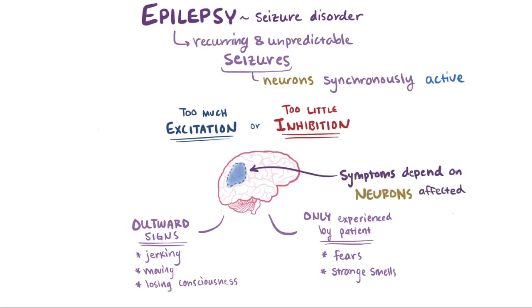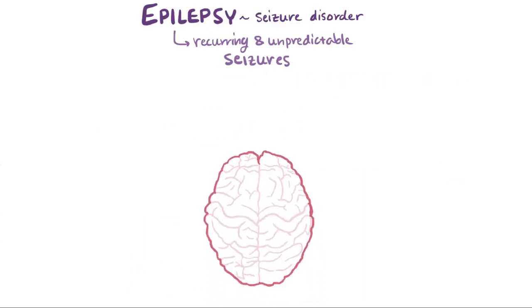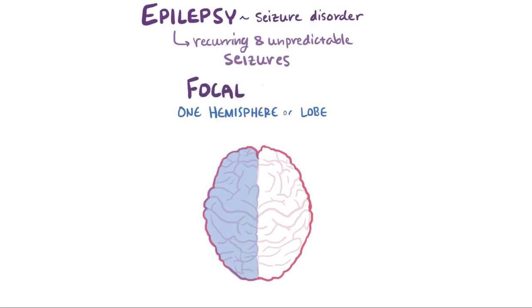People with epilepsy experience recurring episodes of some form of seizures, and we can start grouping the seizures by the region of the brain that's affected. When the affected area is limited to one hemisphere — or one half of the brain — or sometimes even a smaller area like a single lobe, we call it a focal seizure, which used to be called a partial seizure.